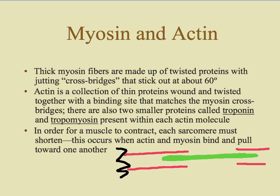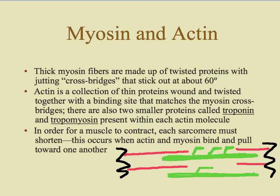We have our Z-lines that attach to the actin. The myosin has what are called cross bridges — little hooks that stick out from the top and bottom of the myosin. The only way these fibers can change position is if the actin and the myosin actually bond with one another, and that is a challenging process requiring a lot of things to happen simultaneously.